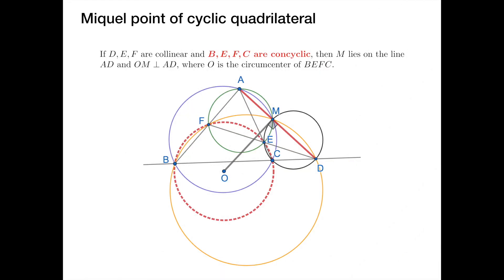Now if I add one more condition that the points B, E, F and C are concyclic with circumcenter O, then the Miquel point M lies on the line AD, and moreover the line OM is perpendicular to the line AD. And this is what we learned in the first lesson, which is called the Miquel point of a cyclic quadrilateral.